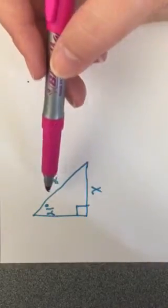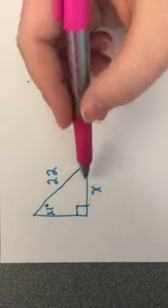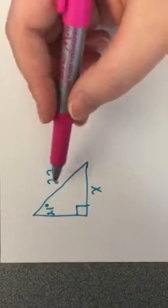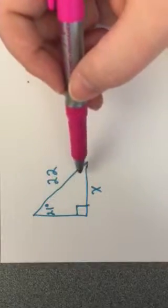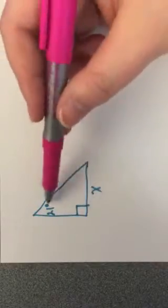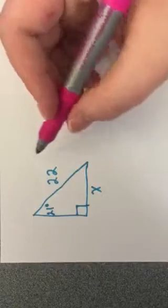Same concept applies. We want to find this side length down here that's represented by the x. We need to identify what side lengths did they give us. They gave us the side that's opposite our right angle, which as you remember, this is our hypotenuse.